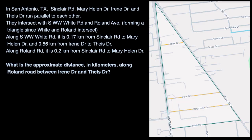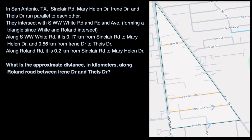We're told in San Antonio, Texas, Sinclair Road, Mary Helen Drive, Irene Drive, and Theus Drive run parallel to each other. We have a map here of part of San Antonio, Texas, and we can see that Sinclair Road, Mary Helen Drive, Irene Drive, and Theus Drive are parallel to each other.